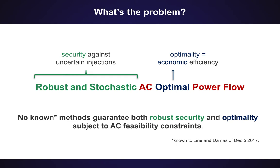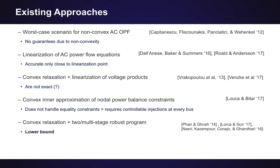This presentation is called 'Towards Robust AC Optimal Power Flow' because most methods from the optimization community are really looking at robust and stochastic convex problems, and we have some challenges because of non-convexities. As of December 2017, there was no known method that could guarantee both robust security and optimality subject to AC feasibility constraints — at least to the very best of our knowledge, having looked quite thoroughly.